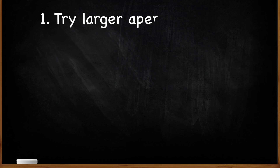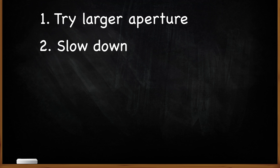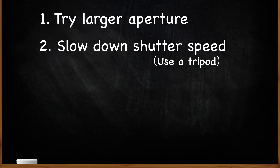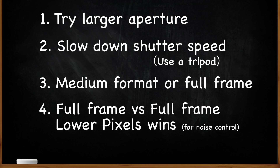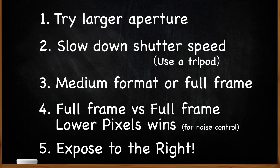Rule one: a larger aperture lens has more capability for absorbing light, so in theory you'll always get a cleaner shot using an f1.4 lens compared to f2.8. Rule two: try to make your shutter speed as slow as you can to absorb more light — always bring a tripod if possible. Rule three: if avoiding noise is your top priority, select a medium format or full-frame camera. Rule four: pixel density also affects how much light your camera absorbs — for example, a 12MP A7S III has much better noise performance than the 61MP A7R IV. Rule five: in most cases, use the 'expose to the right' technique — your camera gains more light by doing so, which will improve the signal-to-noise ratio.